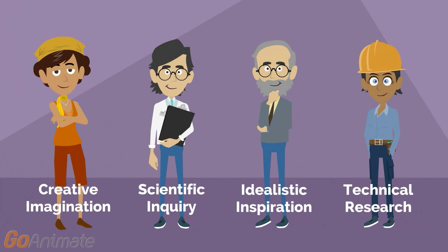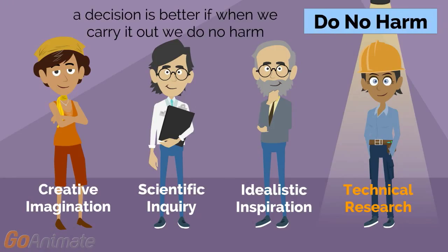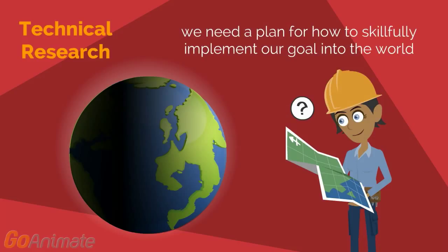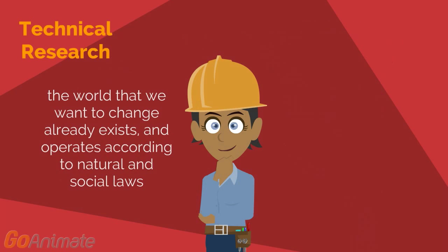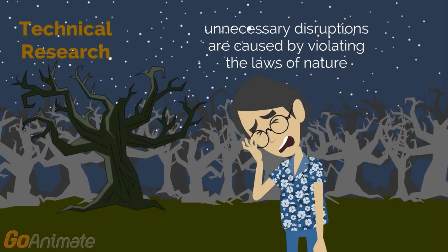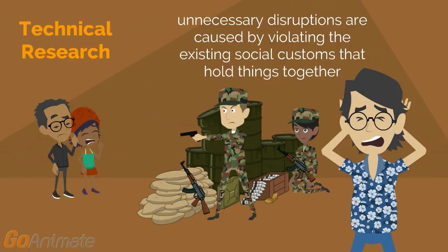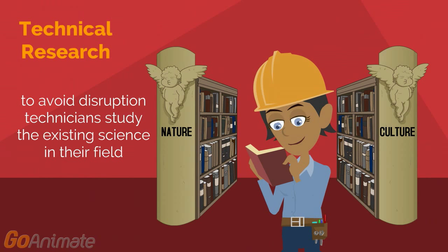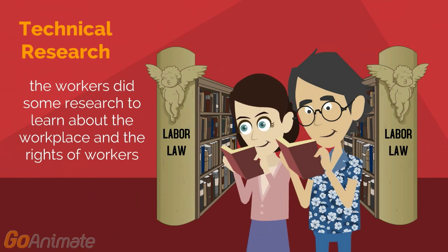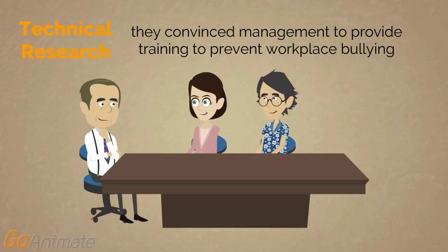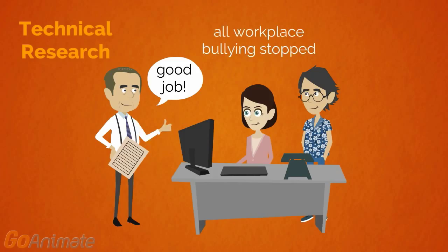We conclude with skill 4: technical research. A decision is better if, when we carry it out, we do no harm. We need a plan for how to skillfully implement our goal into the world. We call this moral technique. The world that we want to change already exists and operates according to natural and social laws. Unnecessary disruptions are caused by violating the laws of nature or the existing social customs that hold things together. To avoid disruption, technicians study the existing science in their field. The workers did some research to learn about the workplace and the rights of workers. They convinced management to provide training to prevent workplace bullying, and all workplace bullying stopped.